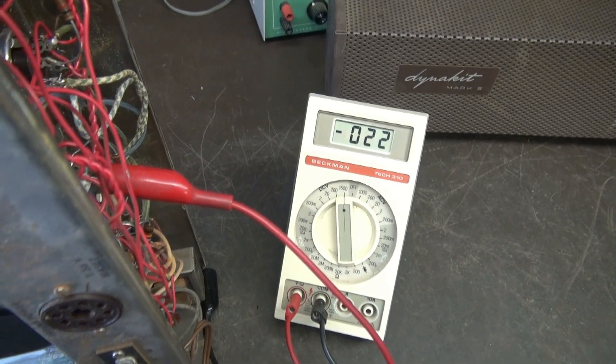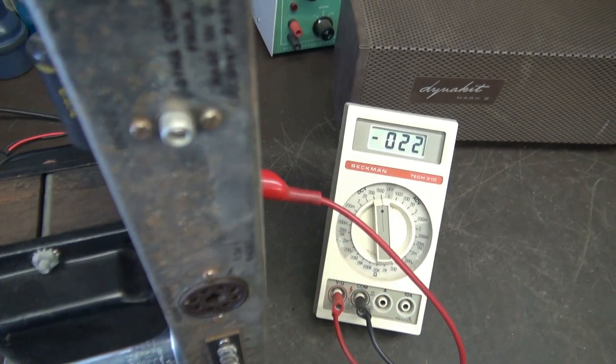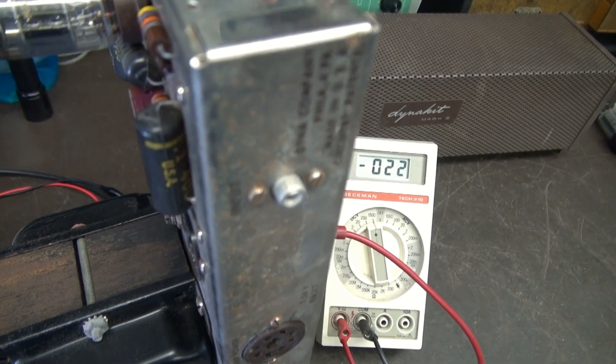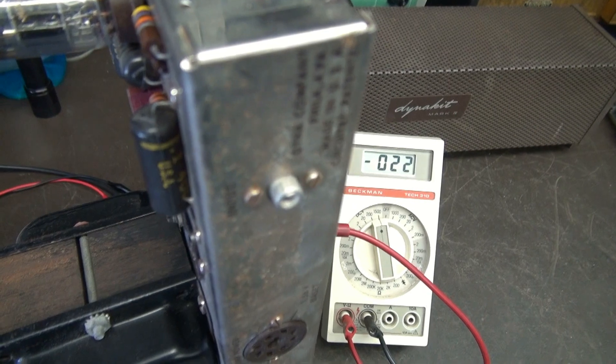The reason I'm going to do that is I don't want to put in my output tubes and not have enough negative bias to hold them babies down so they don't go in flames. Alright, next step. Let's get the output tubes in.